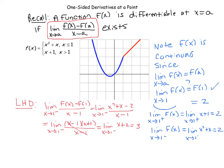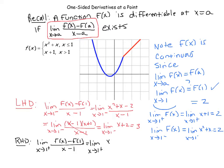Now let's check the right-hand derivative. That's the limit as x goes to 1 from the right of [f(x) − f(1)] divided by (x − 1). Coming from the right, f(x) is defined to be x + 1, so this equals the limit as x goes to 1 from the right of (x + 1 − 2) divided by (x − 1), which simplifies to (x − 1) over (x − 1), which equals 1.